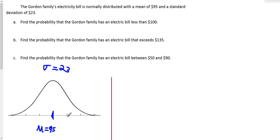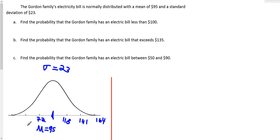From 95, if I add 23, the next hash mark will be 118. The next will be 118 plus 23, or 141. And the next hash mark will be 164. On the other side, subtracting 23 from 95 gives 72, then 49, then 26.